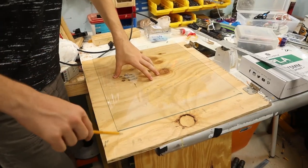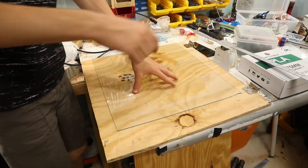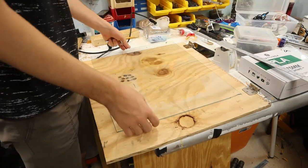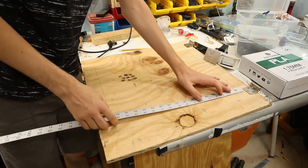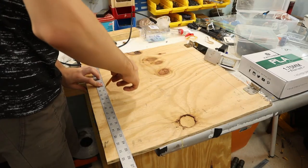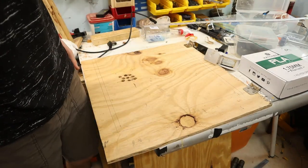So I want this window in here, so I'm just going to mark around it. And then I'm just going to give like half an inch on every side of the window so I can glue it in. And now I'm just going to cut it out.